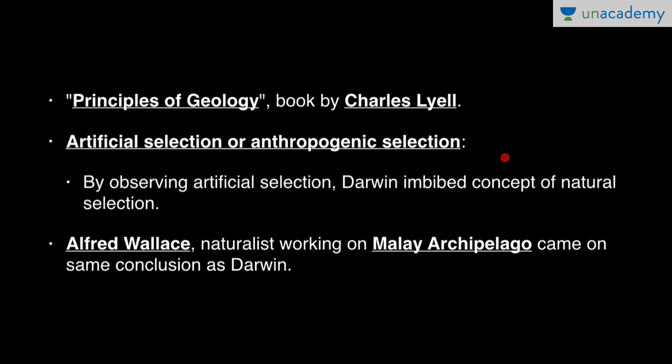Third is artificial selection, or anthropogenic selection. Artificial selection is when humans develop some variety by crossing selected male and female parents — whether animal or plant — with desired traits, so that progeny have particular phenotypic traits required, thus developing a different variety. By observing artificial selection, Darwin imbibed the concept of natural selection.